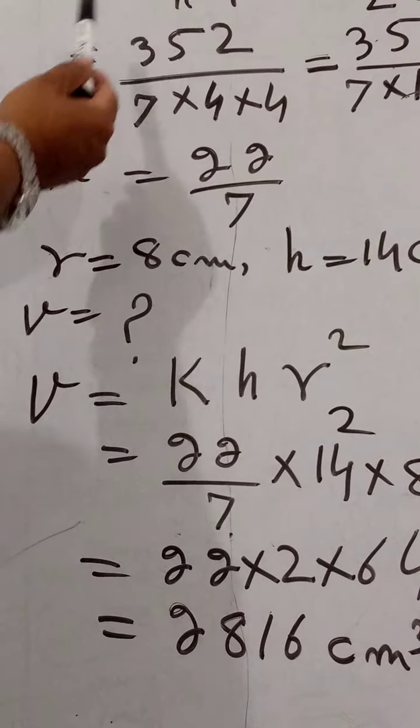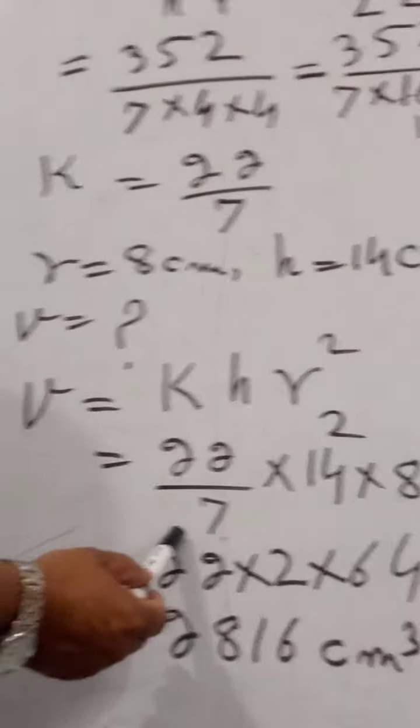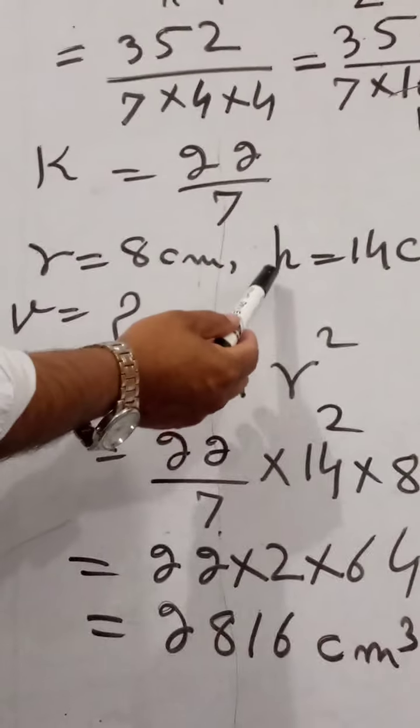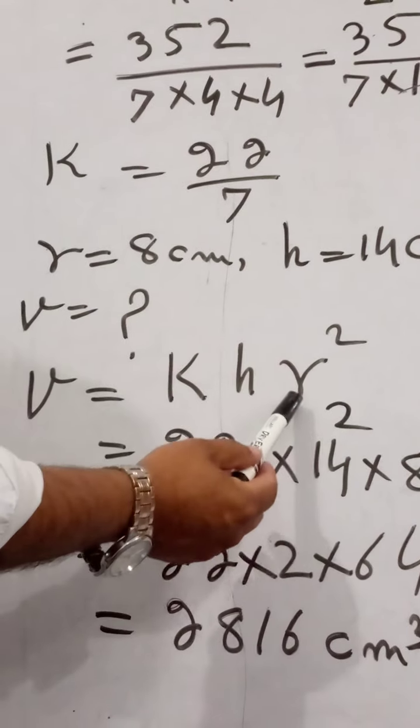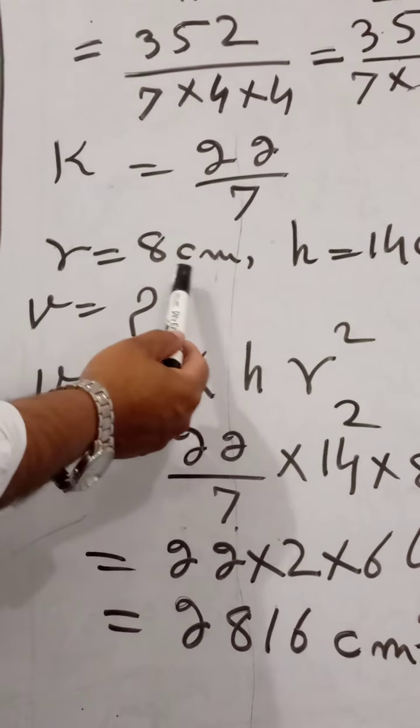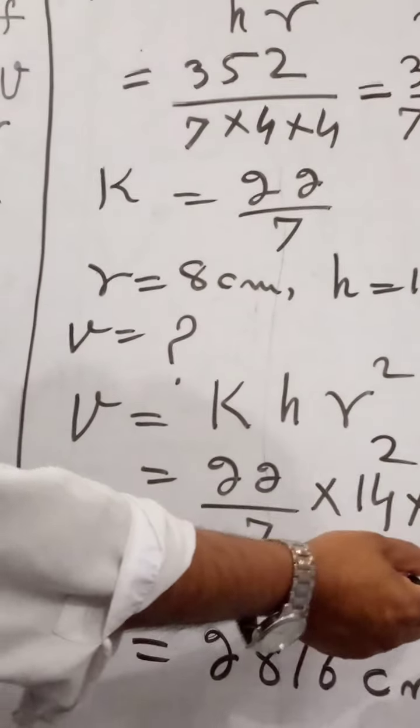K, we find from the given data, which is 22 divided by 7. And height is given, which is 14 cm. And R is given, which is 8 cm. From R square, 8 into 8.